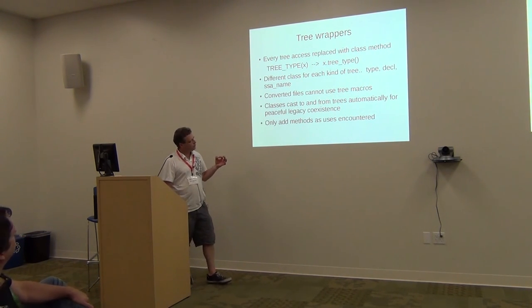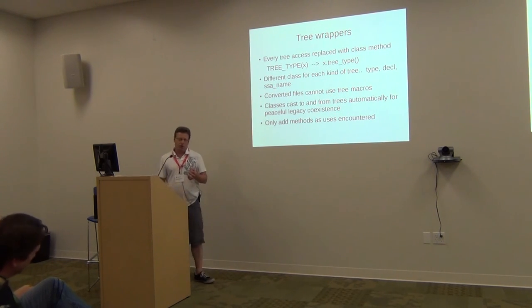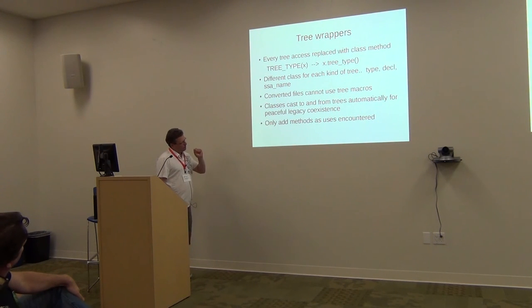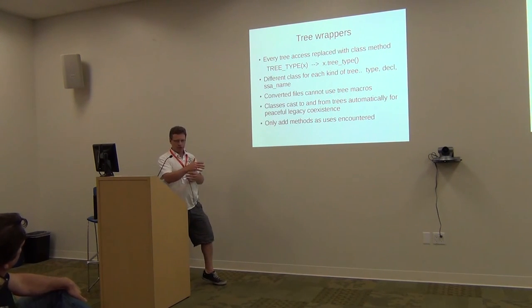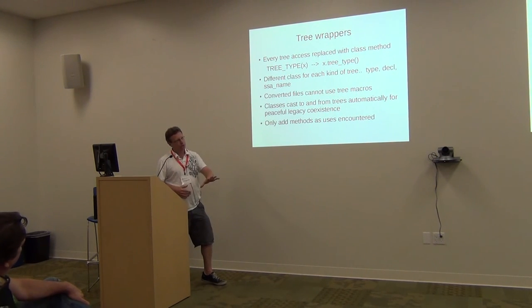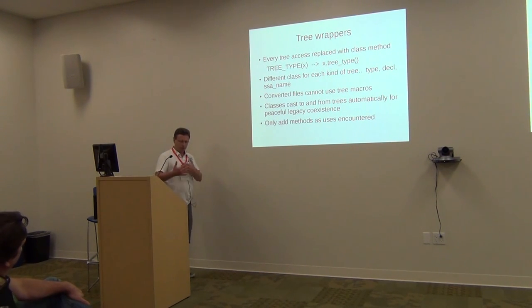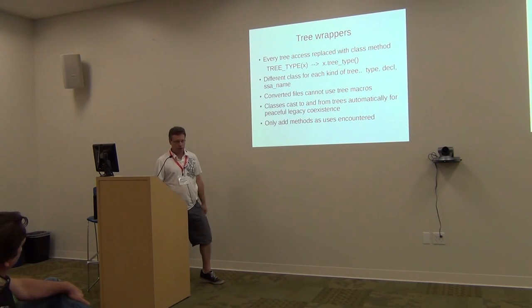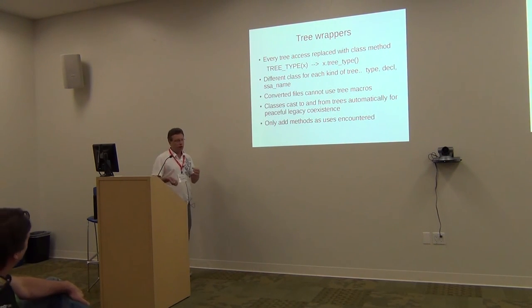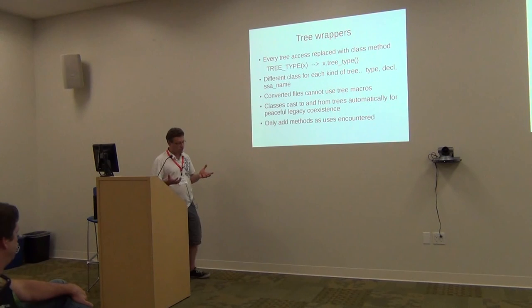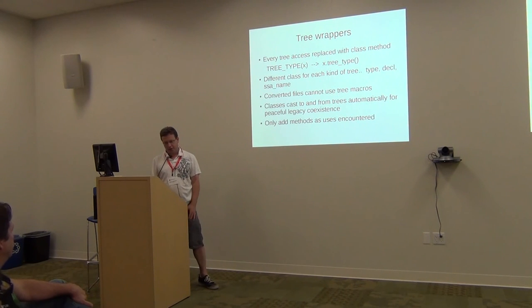I'm trying to build these classes organically — as I process through a file, I only add methods to the class for the Gimple type as I encounter macro uses. When the conversion is completely done, the classes will only have methods for things we actually use in that context. If there are front-end things in the tree that we don't use in the middle-end or back-end, we'll know because they won't be in the class. We'll have a handle on what we're actually using in the compiler, because I know there are deprecated things in there that nobody knows where they are.